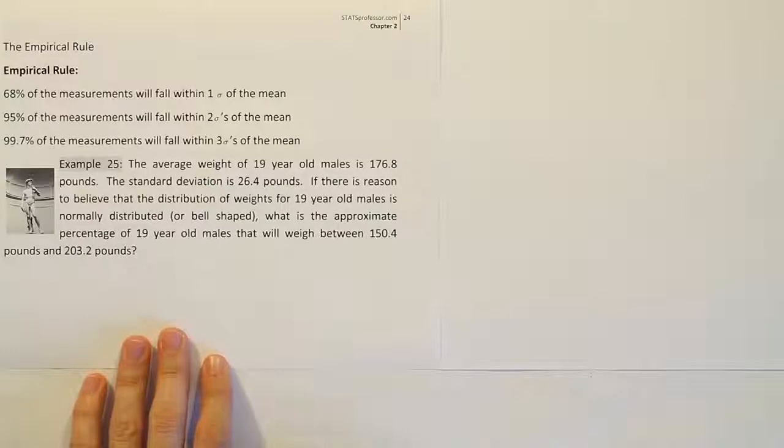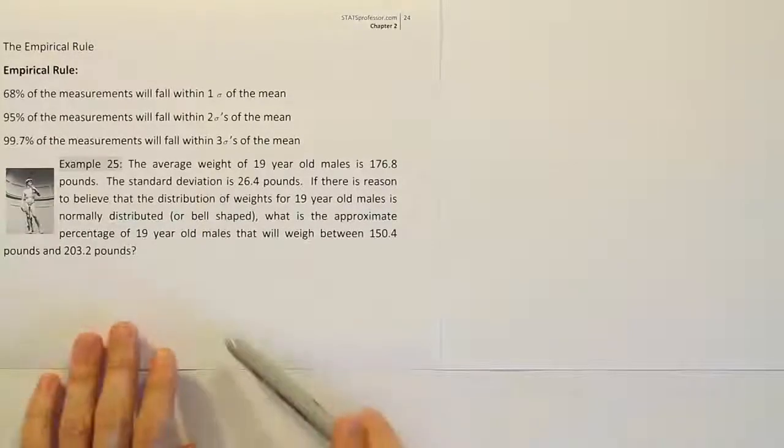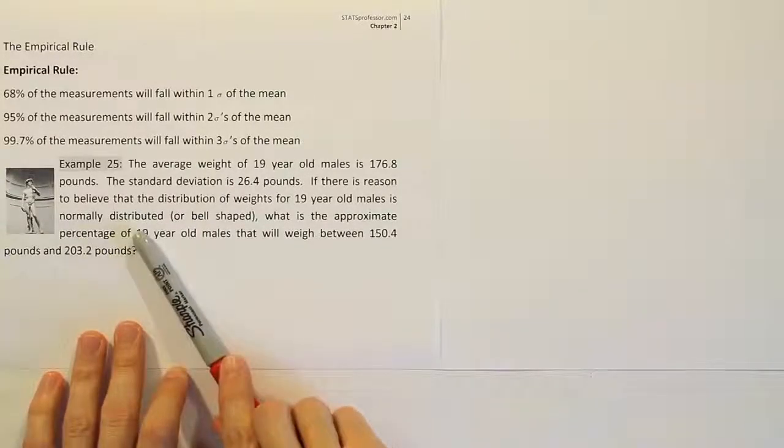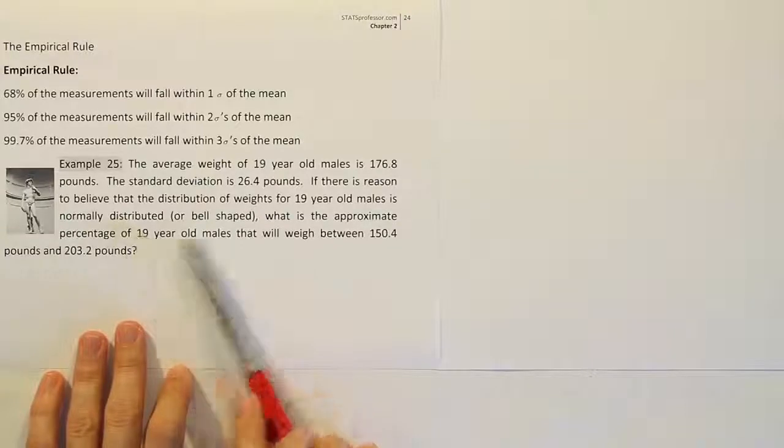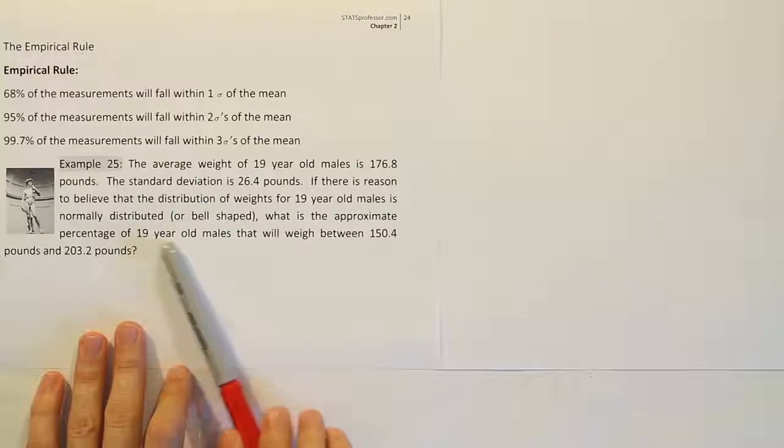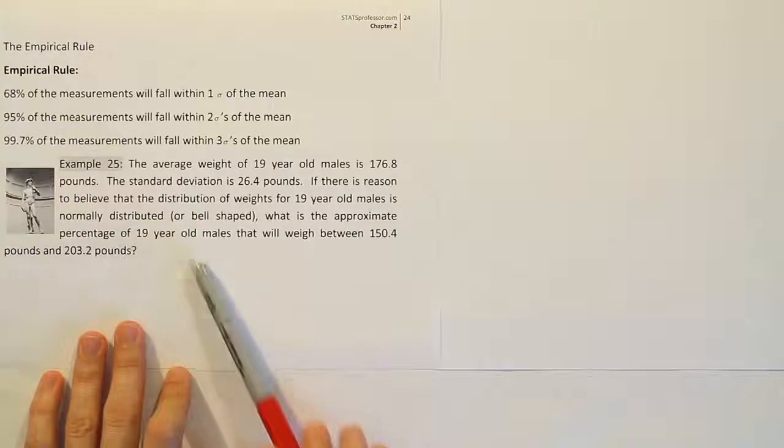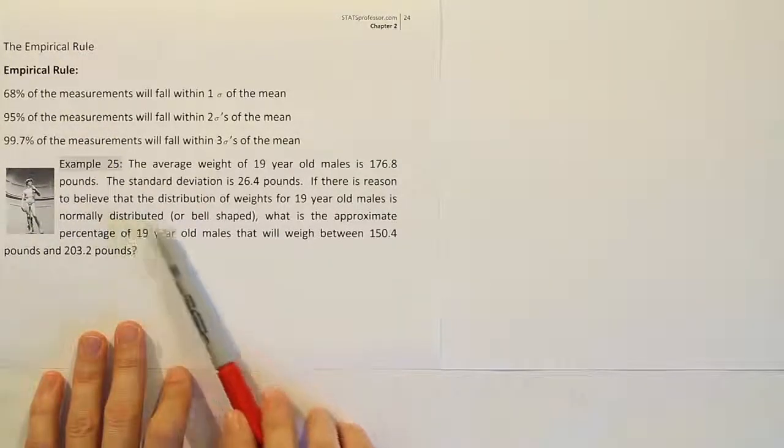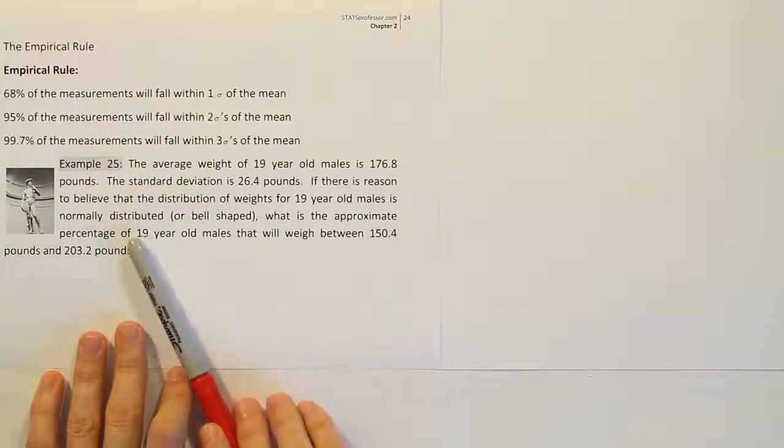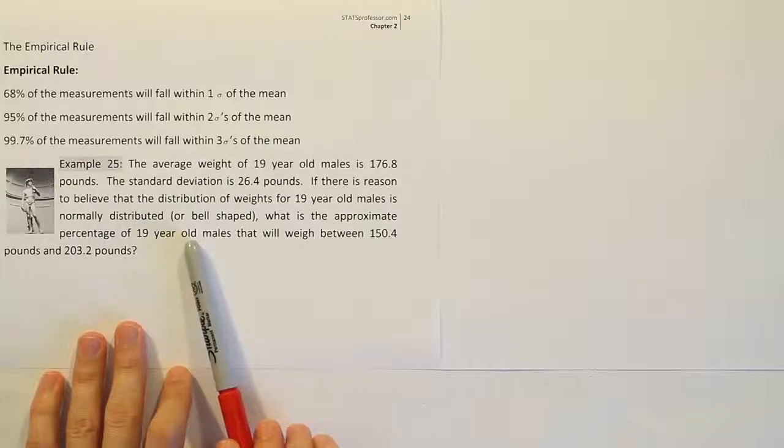And here we have two numbers forming an interval. So it looks like to me this is empirical rule. There's one other thing that's a dead giveaway that it's the empirical rule, and that's this mentioning that it's normally distributed. So in Chebyshev's theorem, they talked about what percentage was inside an interval, but they never mentioned the idea that there was a bell curve involved in the problem. Because if they had, we would then know we could use the empirical rule. So during Chebyshev's rule, you're never told anything about the distribution. The only thing they might say is that they don't know anything about the distribution, and that means essentially that you have to assume that it could be any distribution, and you must use Chebyshev's theorem.